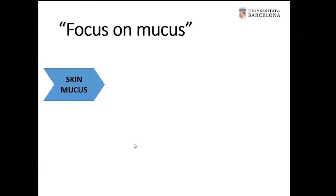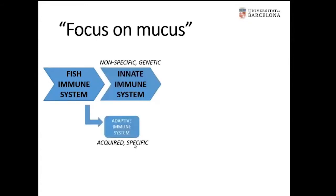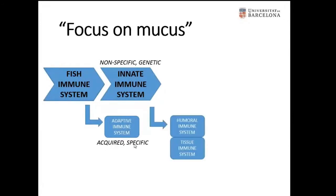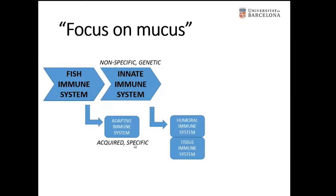The main aim of the webinar is to focus on mucus and the immune system and defenses. Traditionally, the immune system is divided into the innate or non-specific immune system, also called the genetic immune system, and the adaptive or specific immune system, also called the acquired immune system. The fish immune system, like other vertebrates, has both types of immunity.